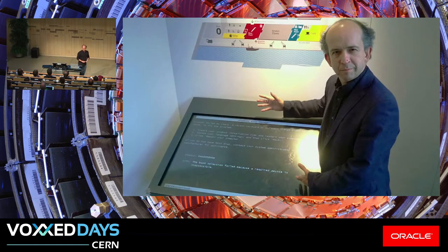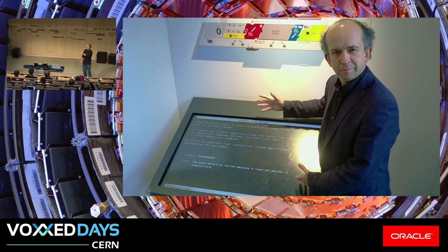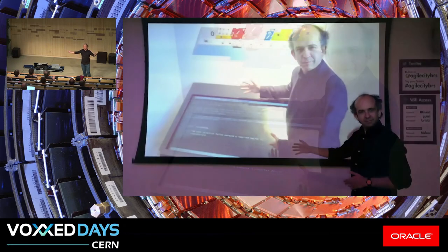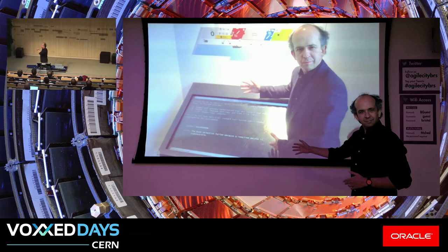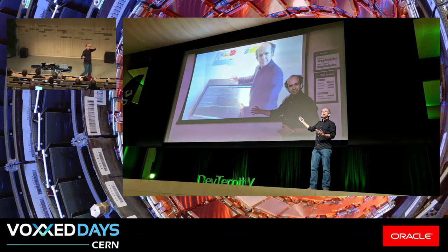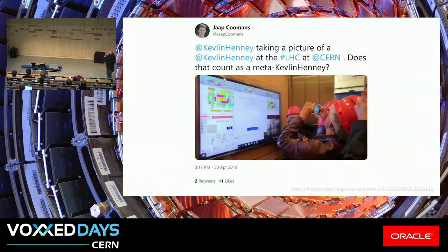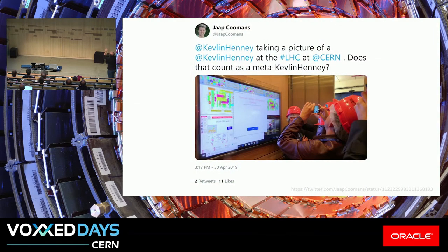A couple of years ago, at Agile in the City, Bristol, 2016, the organizer John Clapham said, 'Quick, there's a Kevlin Henney downstairs — I want to take a photograph of you in front of it, tweet it, then you retweet it.' Mind being blown. The following year we did it again, and then at Devternity we ended up with another one. You know that thing people tell you — as you get older, you shrink? It's true. Yesterday I was presented with a fresh opportunity — a wonderful tour of the CMS. Kevlin Henney taking a picture of a Kevlin Henney at the LHC at CERN. Does that count as a meta-Kevlin Henney?